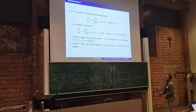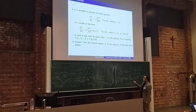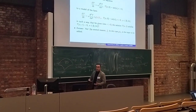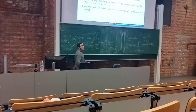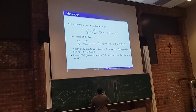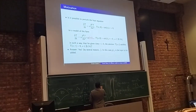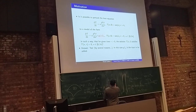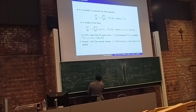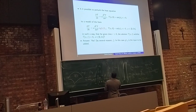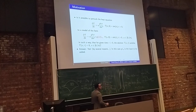This is the null controllability problem in partial differential equations. You want to study the existence of inputs — functions localized in the open subset omega — which drive the solution from the initial condition to zero at time T. To guarantee this PDE property, the microlocal tool we need is this kind of spectral inequality. One can prove that the validity of these spectral inequalities implies null controllability.